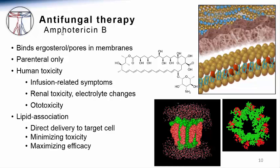Amphotericin B can also cause more serious side effects such as renal failure and electrolyte disturbances. It can also result in ear problems such as altered vestibular function, tinnitus or ringing in the ears, and hearing loss. In order to minimize the toxicity of this medication, amphotericin B has been packaged in association with various lipids. The goal of lipid-associated or liposomal preparations is to create a delivery vessel that will directly fuse with the cell membrane and deliver the drug intracellularly. These lipid-associated forms do in fact have less renal toxicity than the parent compound.